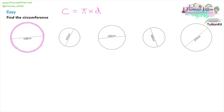The next thing to talk about is the diameter, which I'm gonna highlight in green. That is a line that goes all the way across the circle. A key thing here is that this line goes through the centre of the circle — if it doesn't go through the centre, then it's not the diameter.